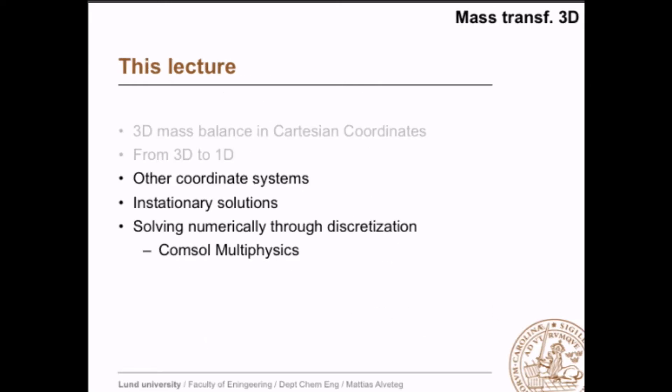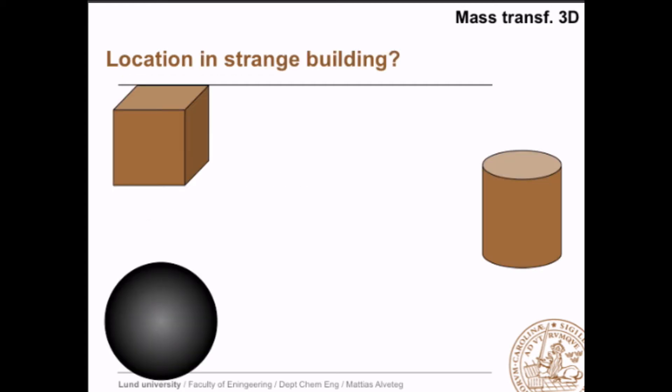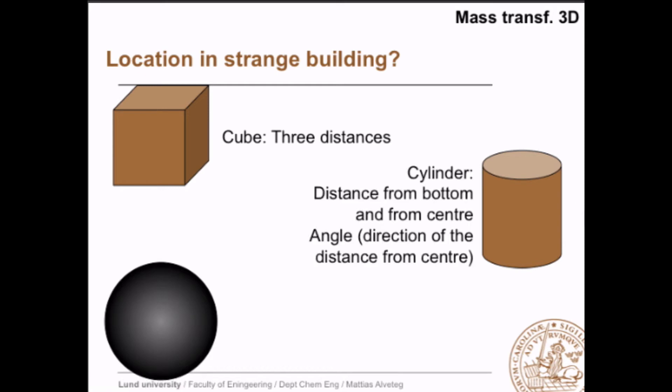Okay, time to look at two alternate coordinate systems. If you want to locate something in a strange building, how do you do that? Well, if you have a cube, you can simply say the distance from this corner here: three in this direction, in this direction, and in that direction, and then you have located the place. But if you have a cylinder, that's kind of an awkward way to do it, because at certain distances, you're suddenly outside the cylinder. So instead, you could do it like this: you have the distance from the bottom, and the distance from the center out, and then you have the angle. And in the sphere, you can define it as the distance from the center, and then an angle in this plane, and an angle in the other plane.